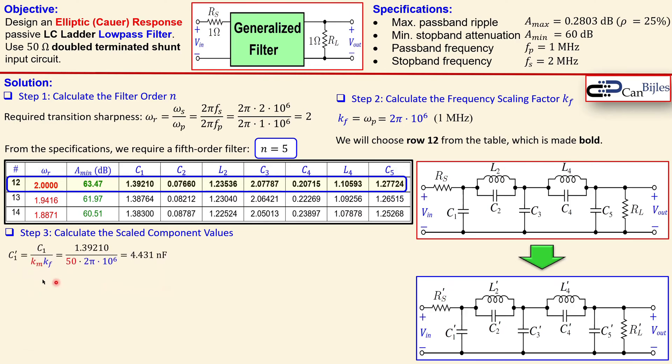So what we do first we look at the formulas for scaling up the capacitors. You see here C1 prime is C1 from here divided by K_m, which is 50 again because we go from 1 ohm to 50 ohm, and then here K_f, which is our frequency scaling factor of 2π times 10 to the power 6. Now when you do the calculation you get 4.431 nanofarads.